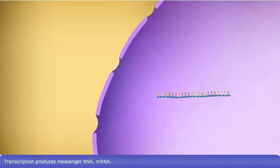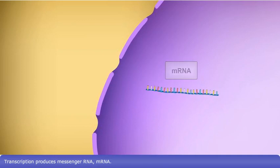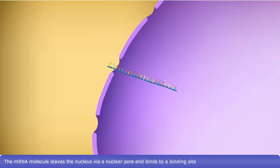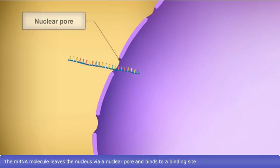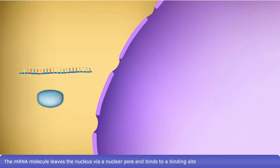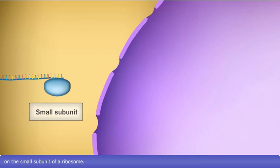Transcription produces messenger RNA, mRNA. The mRNA molecule leaves the nucleus via a nuclear pore and binds to a binding site on the small subunit of a ribosome.